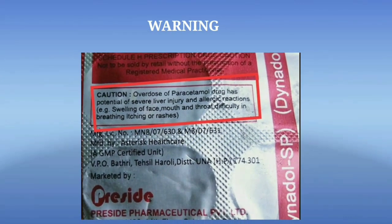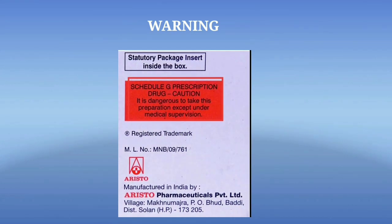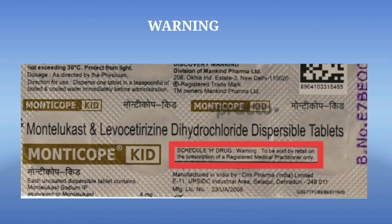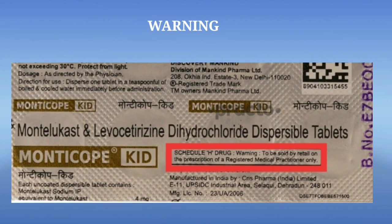The next one is warning signals, given on the label of medication expressed in the form of a red color background. Schedule G drugs: it is dangerous to take this preparation except under medical supervision, and it is printed as 'It is dangerous to take this preparation except under medical supervision.' Schedule H2 drugs: a list of substances that should be sold by retail only on the prescription of a Registered Medical Practitioner (RMP).